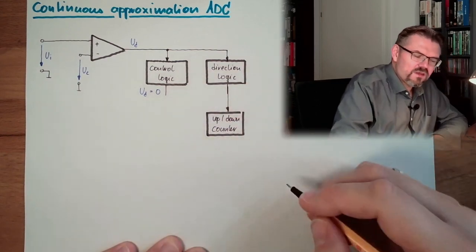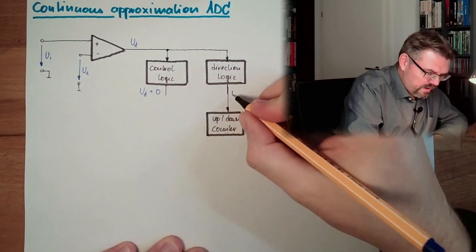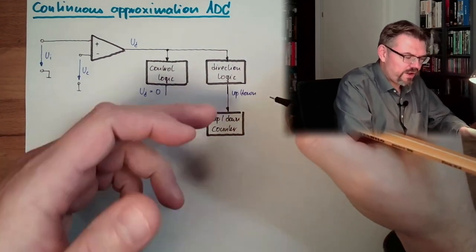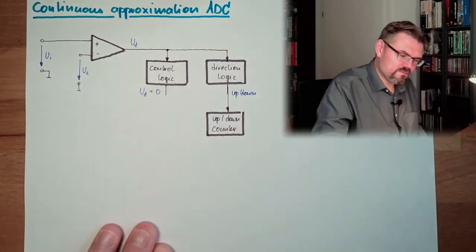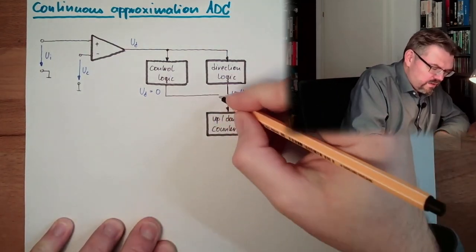However, this counter can count up and down, not only up. This is telling if the counter should count up or down. We have an up-down signal from the direction logic, and here we have the signal, okay we are done.